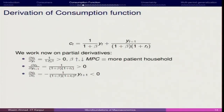δCt/δYt = 1/(1+β). So once beta increases, your MPC comes down, and once beta is lower, MPC goes up. This means you give less preference to the future than the current, which means the current period becomes more important.